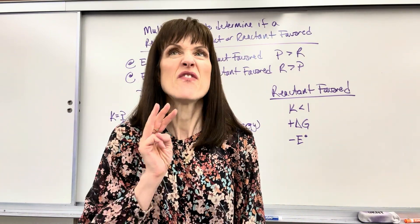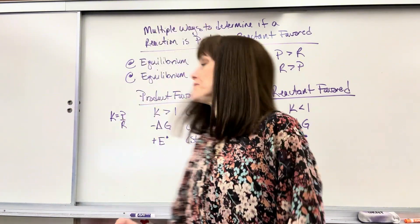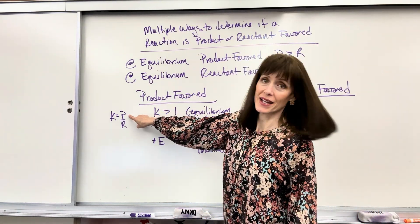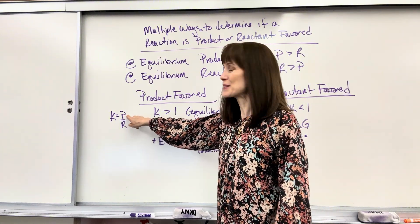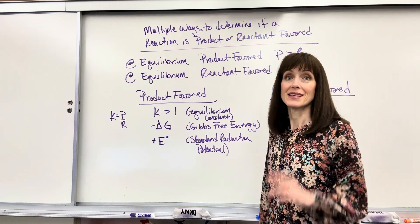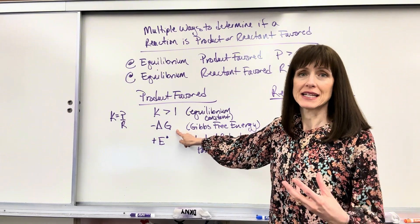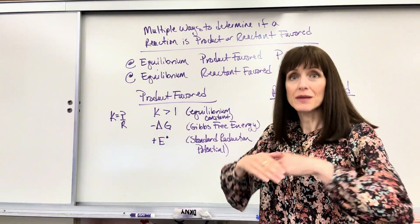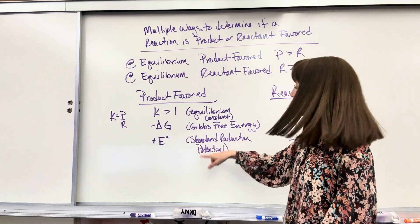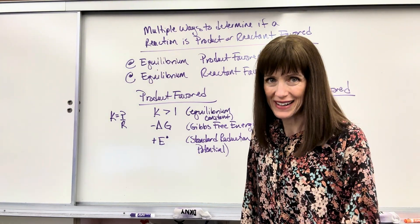There are three fast ways to determine if you have a product or reactant favored reaction. First, product favored: look at the K value. If you have more products than reactants — a bigger numerator than denominator — K greater than 1, you are product favored. Second, if delta G, Gibbs free energy, is negative, that means spontaneous — it is product favored, more products at equilibrium. And the last one is E-naught, our standard reduction potential: if that's positive, you have more products than reactants.